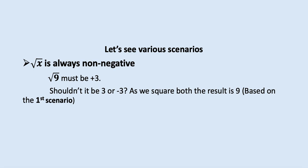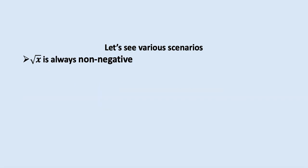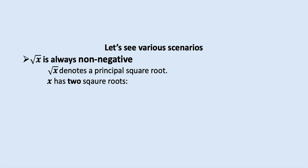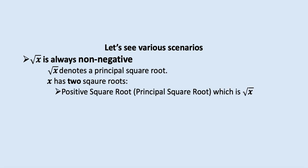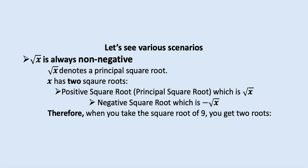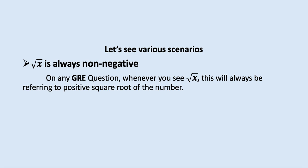But shouldn't it be 3 or minus 3, as in the first scenario? To understand that: the square root symbol denotes the principal square root. X has two square roots, either positive or negative. The positive square root is the principal square root, denoted by √x. The negative square root is represented by −√x. So when you take the square root of 9, in principle you get two roots — √9 = 3 and −√9 = −3. But in GRE, whenever you see √x, it always refers to the positive or principal square root. That's why √9 is always positive 3.